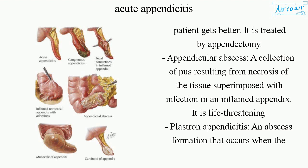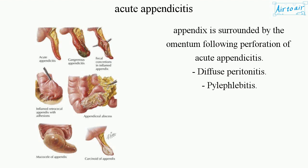Appendicular abscess is life-threatening. Plastron appendicitis is an abscess formation that occurs when the appendix is surrounded by the omentum, following perforation of acute appendicitis. Other complications include diffuse peritonitis and pylephlebitis.